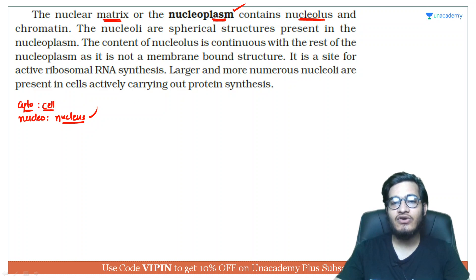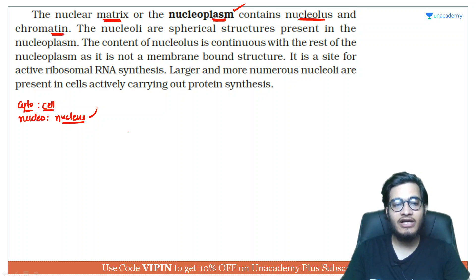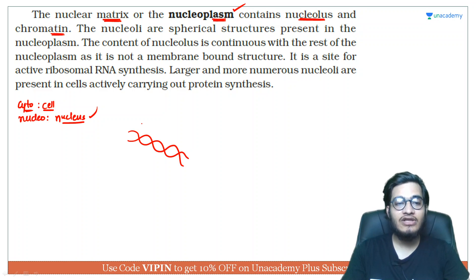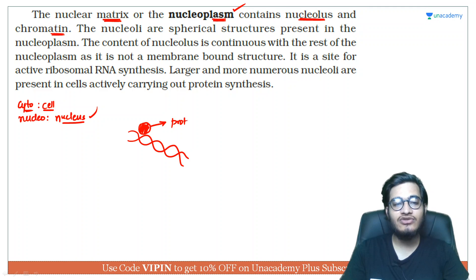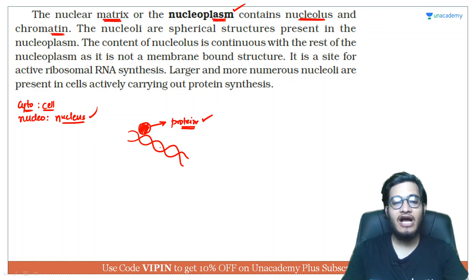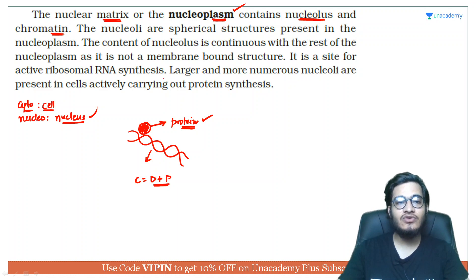In the nucleoplasm, your nucleolus is present, and chromatin is present. So what is chromatin? Chromatin is the combination of DNA with proteins, because when you have to do the packaging of DNA, you have to utilize certain proteins — like histone and non-histone chromosomal proteins. So chromatin is not just DNA; chromatin is a complex term used for nucleic acid plus protein together.